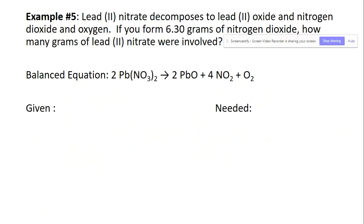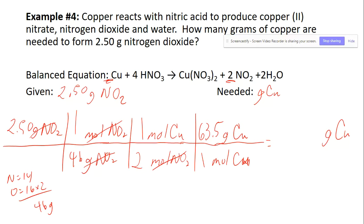Multiplying the tops and dividing by the bottoms — that's a 46 on the bottom — you get 1.72 grams of copper.